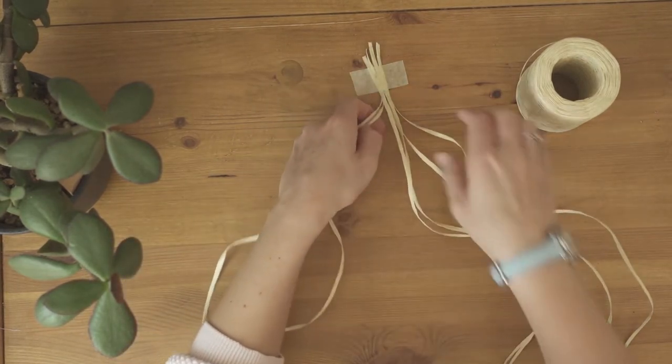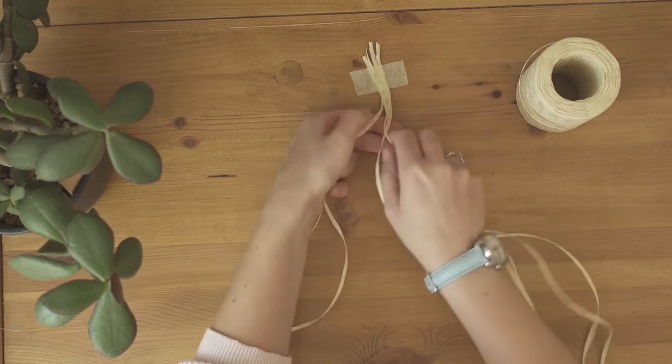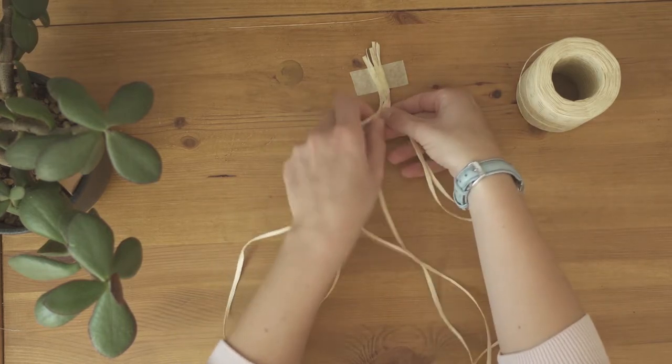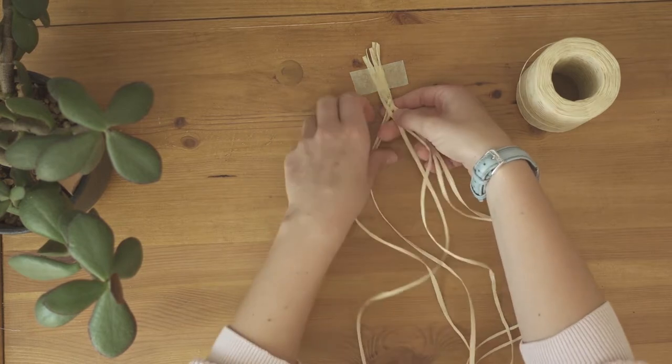So I took a raffia cord that I already had in my stash. I made a regular braid, and to make it more thick I used six strings of cord instead of three.